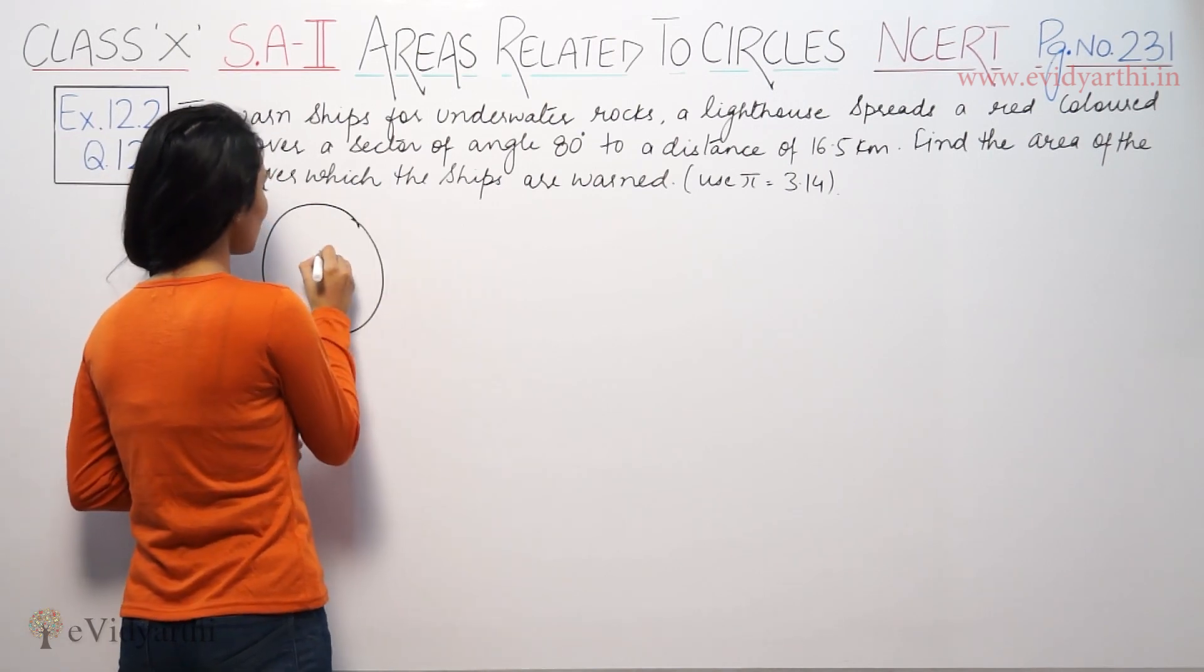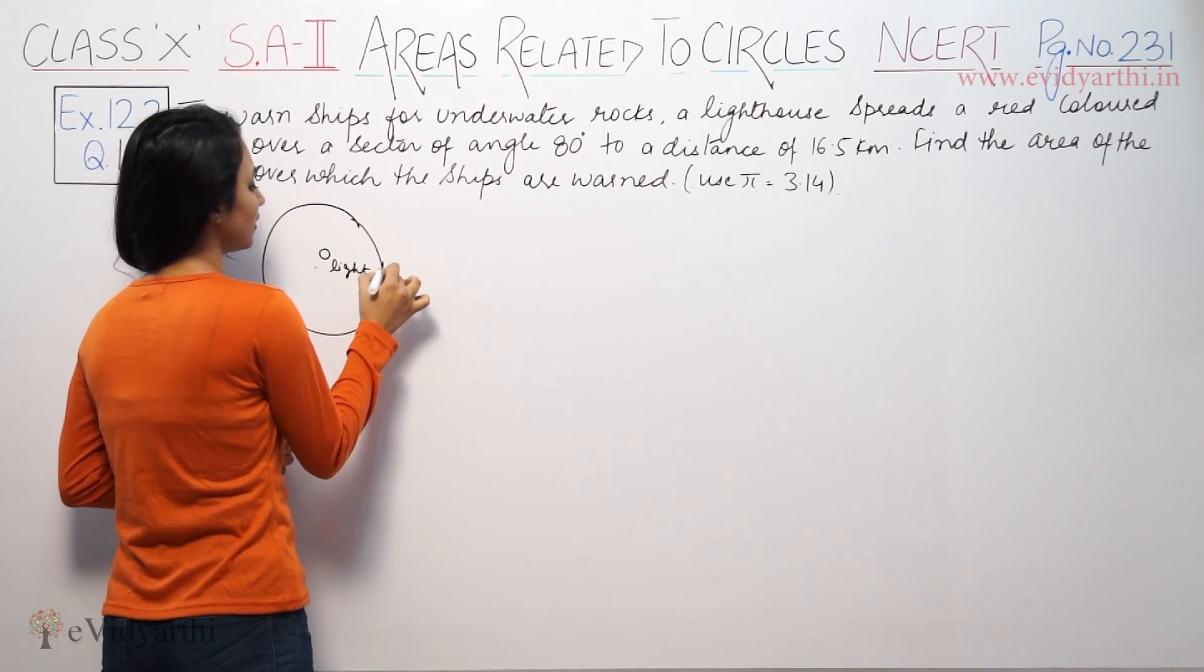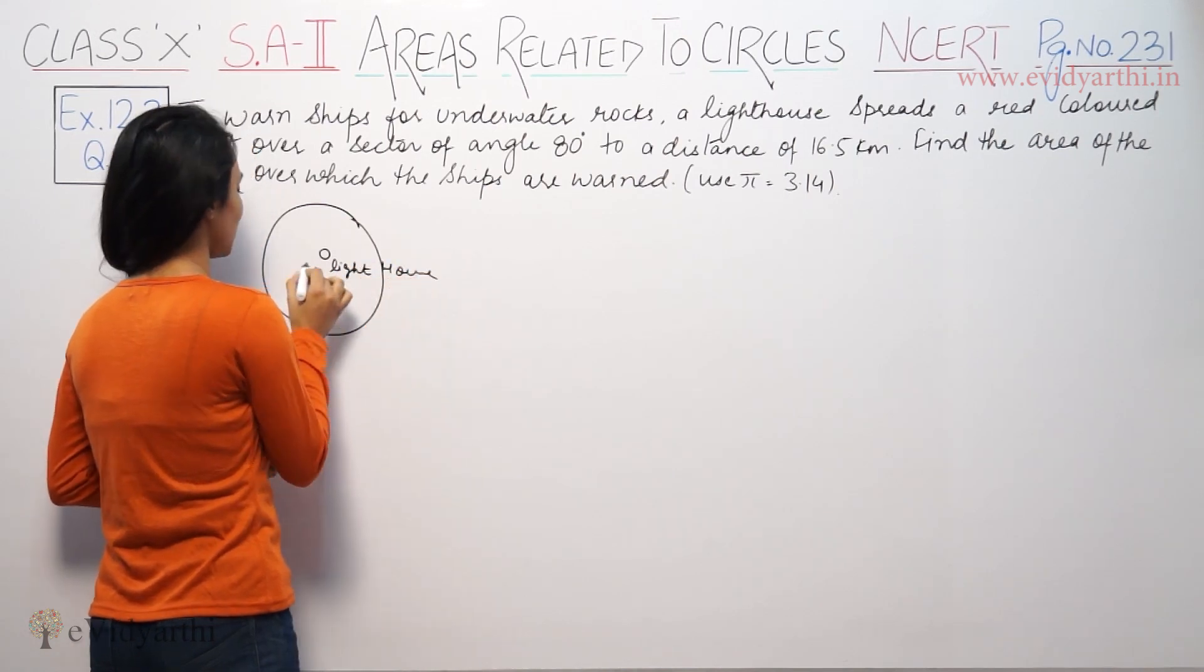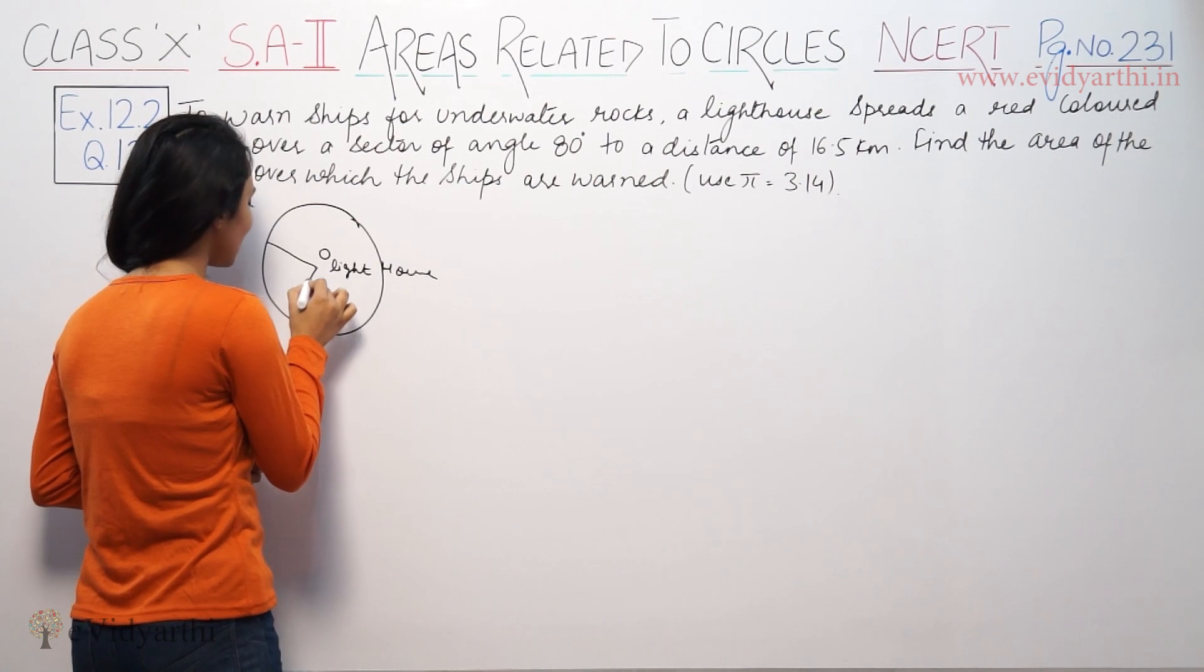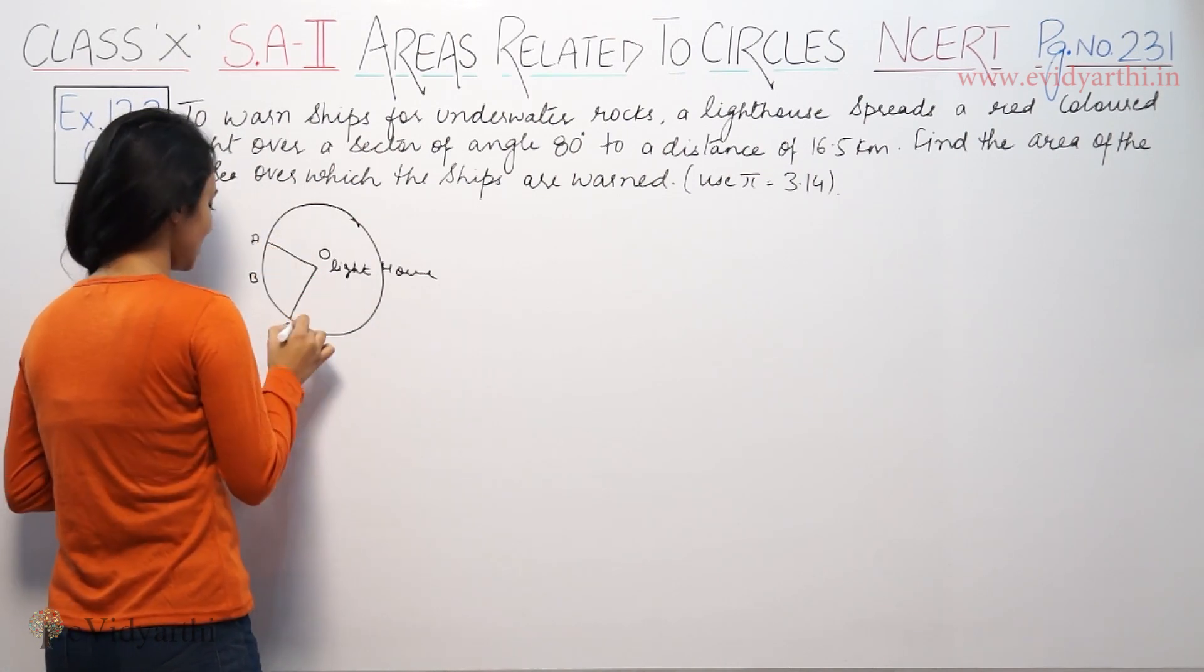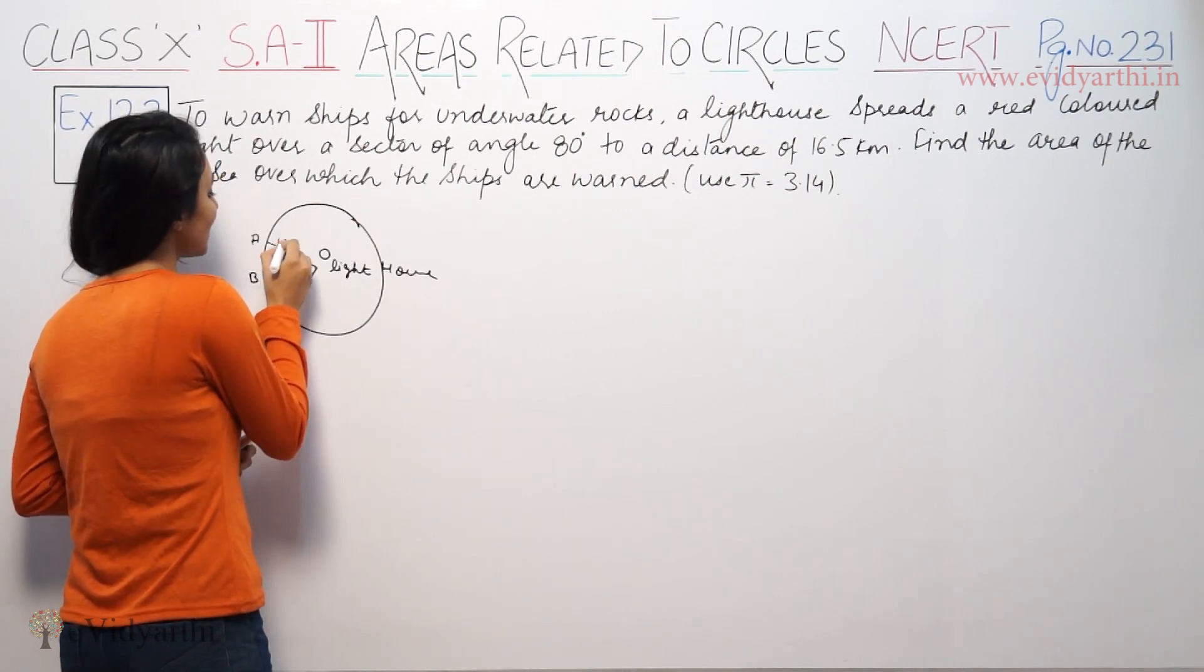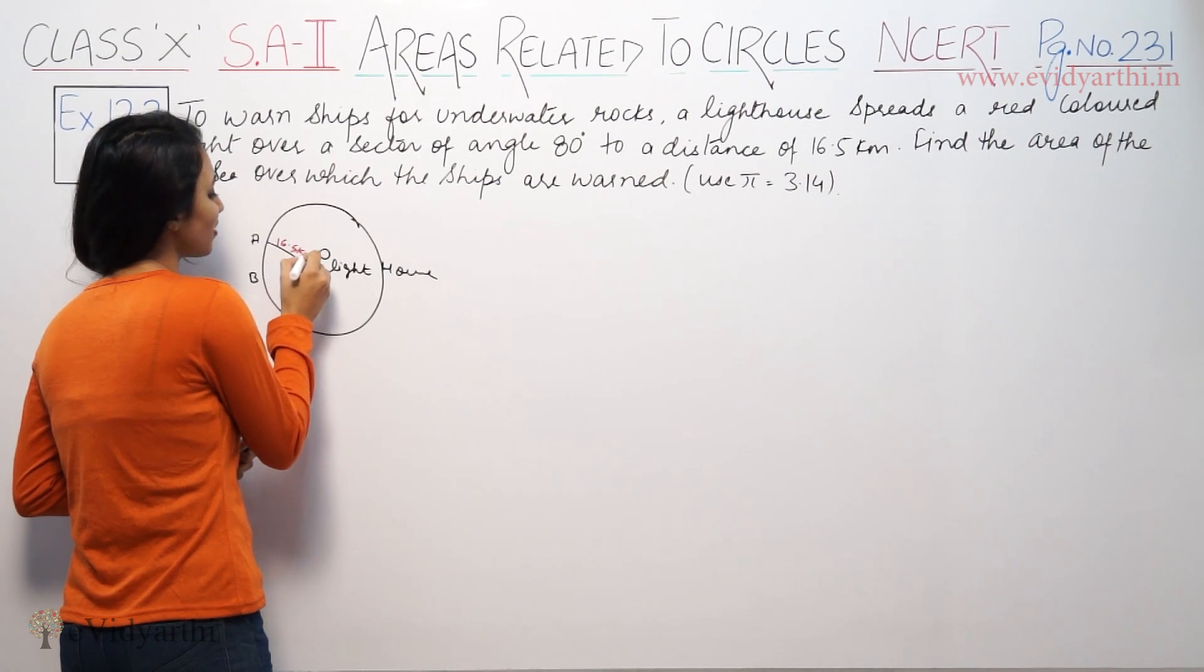So this is the circle. This is our center. Let's suppose the lighthouse is here. This is the light in the area. Let's suppose this is A, this is B and this is C. This particular area which light is in the area is 80 degrees and the distance is 16.5 km.